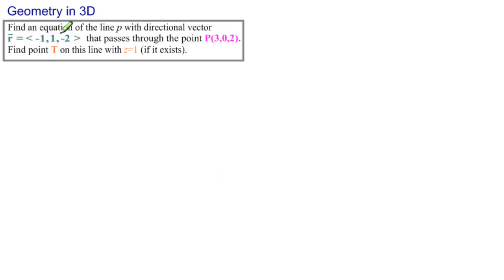The problem reads: find an equation of the line p with directional vector r that passes through the point P, and then find point T on this line with z equal to 1 if such a point exists.